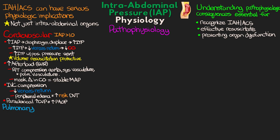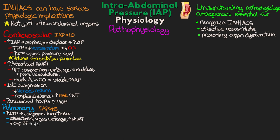Now let's move on to the pulmonary system. The elevated intra-abdominal pressure leads to increases in intra-thoracic pressure, which then leads to compression of lung tissue and pulmonary dysfunction — something we can actually see with intra-abdominal pressures greater than 15. All of this can result in atelectasis, decreased gas exchange at the pulmonary capillary membrane, increased intrapulmonary shunt, decreased pulmonary capillary blood flow leading to decreased CO2 excretion, and increased alveolar dead space. We also see increases in both peak inspiratory pressure and mean airway pressure, while spontaneous tidal volumes and pulmonary compliance are decreased.